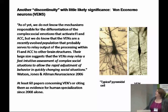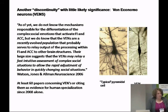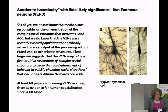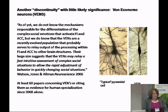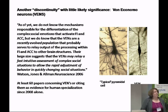Here's something very peculiar — Von Economo neurons, also called VENs. A quote: 'We do not know the mechanisms responsible for the differentiation of complex social emotions that activate FI and ACC, but we do know that VENs are a recently evolved population that probably serves to relay the output of processing within the frontoinsular cortex and ACC to other brain structures. Their large size suggests they may relay a fast intuitive assessment of complex social situations to allow rapid adjustment of behavior.' A Google search came up with about 60 papers either summarizing this or following up on the same thing.